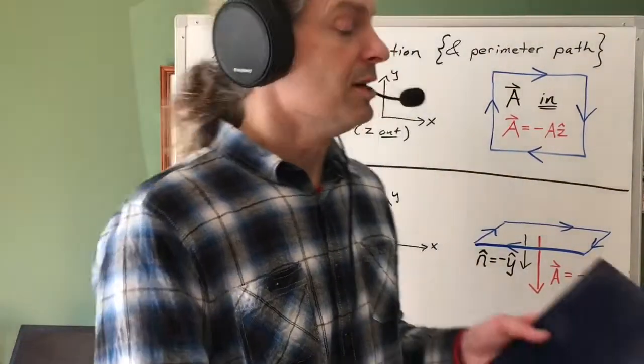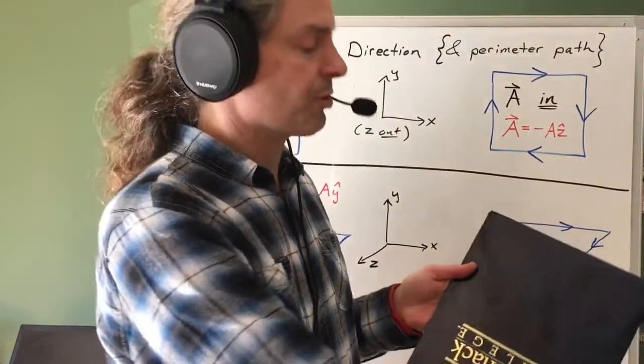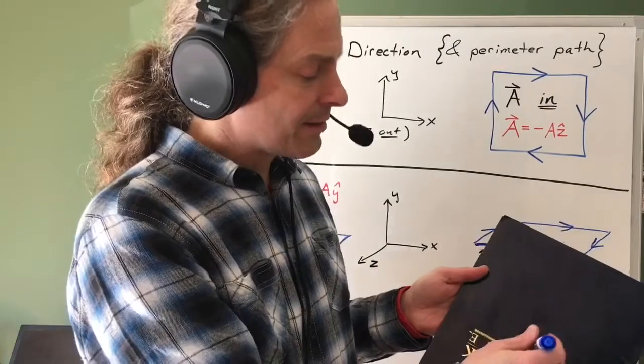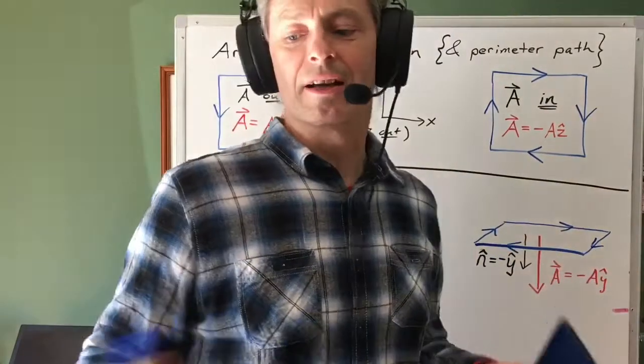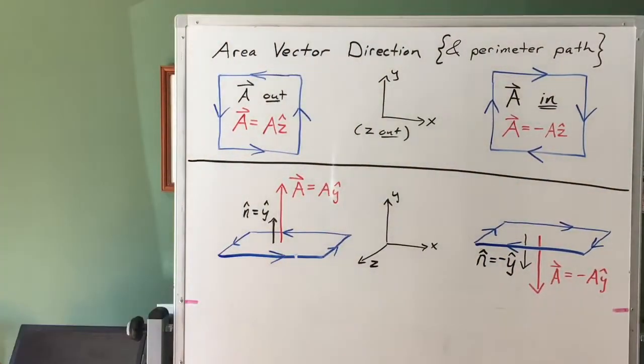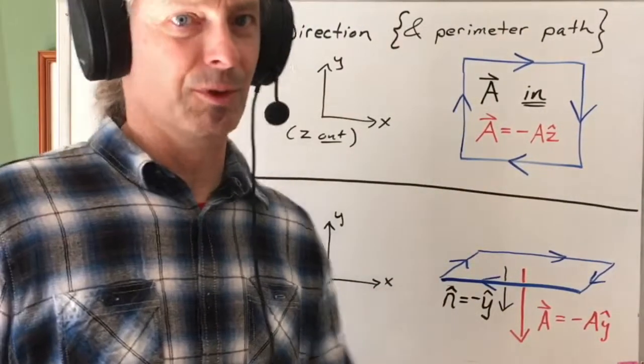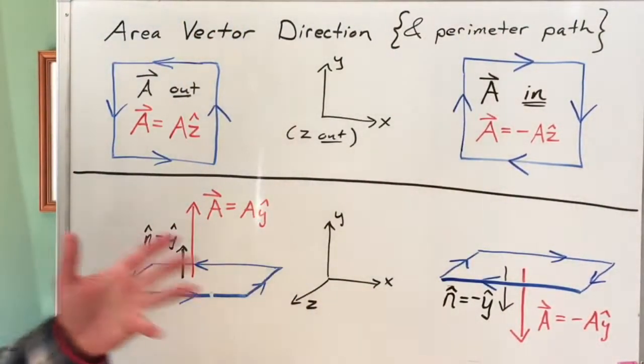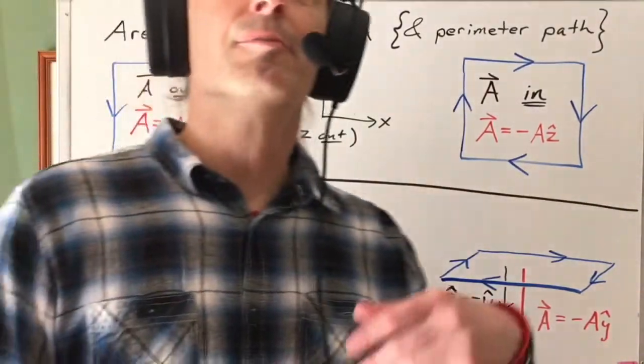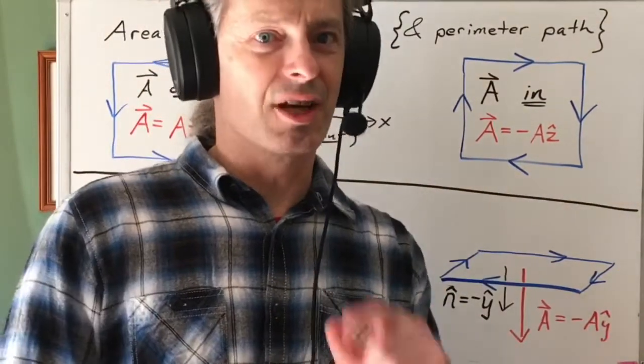Or, turning it around, if I've chosen a positive direction to go around the perimeter, that constrains my choice of area vector. So let's see how that works. The relationship is actually a right-hand rule relationship. So I started by talking about the area vector, but let me change things up and start with the perimeter.